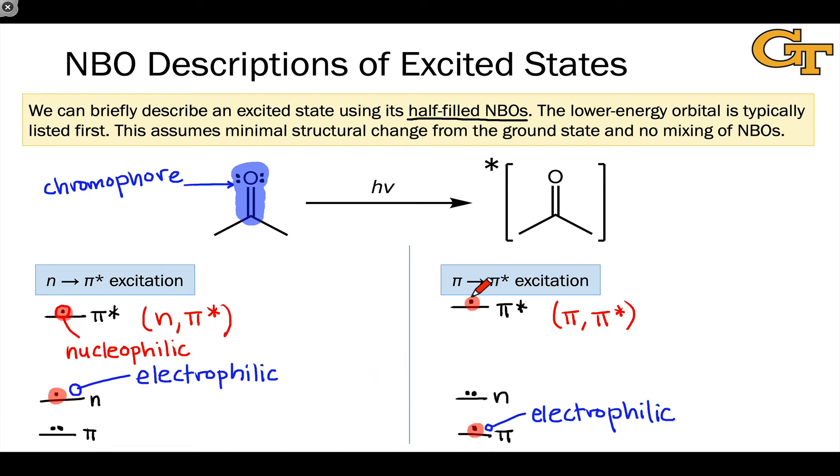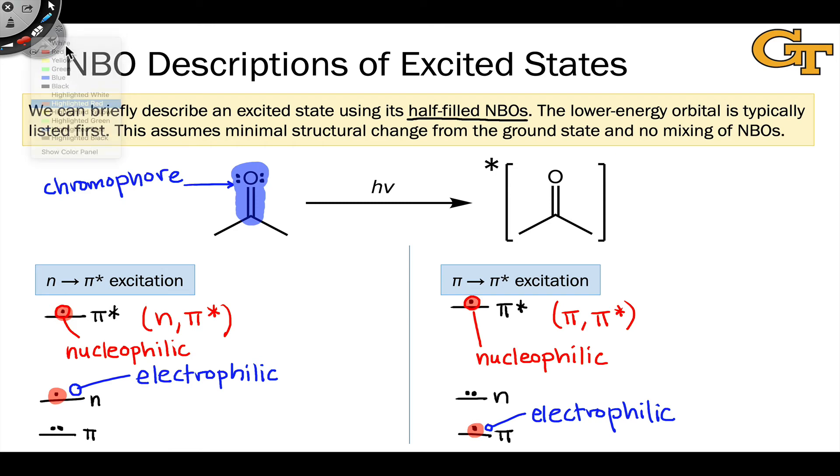The exact same argument applies in the (π, π*) state. This electron is profoundly nucleophilic, much more nucleophilic than when it was in the π orbital. So another way to think about this notation is that the electrophilic orbital is listed first, and the nucleophilic orbital is listed second.